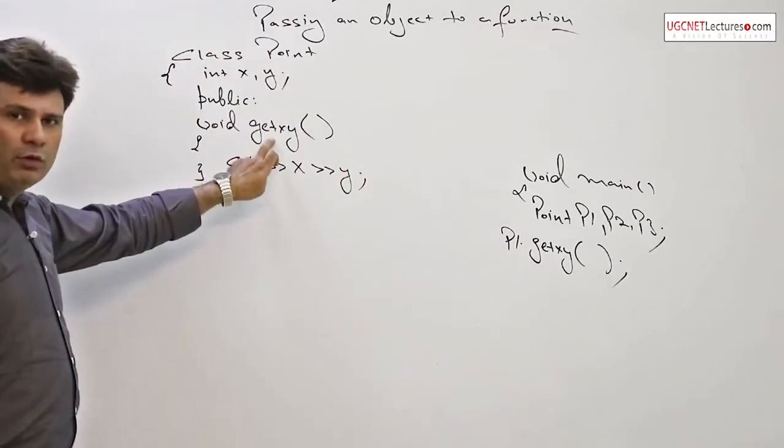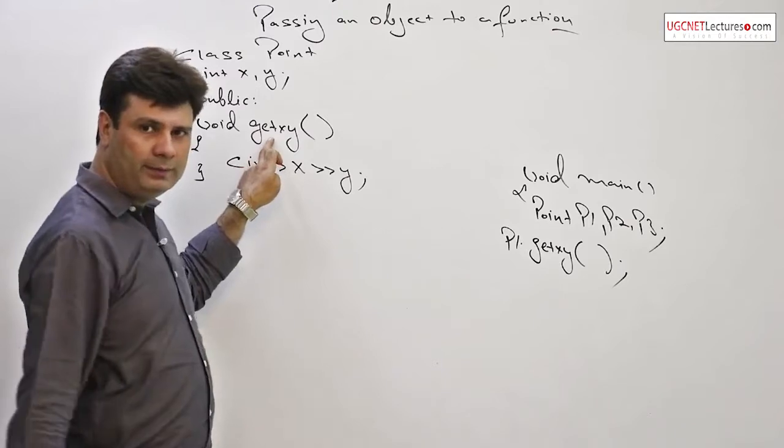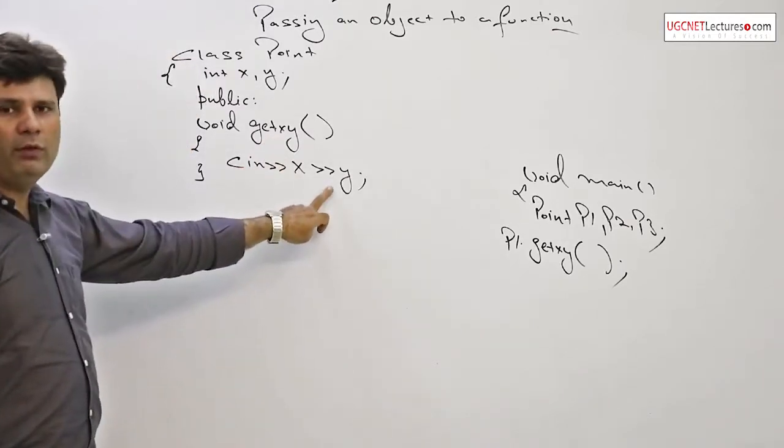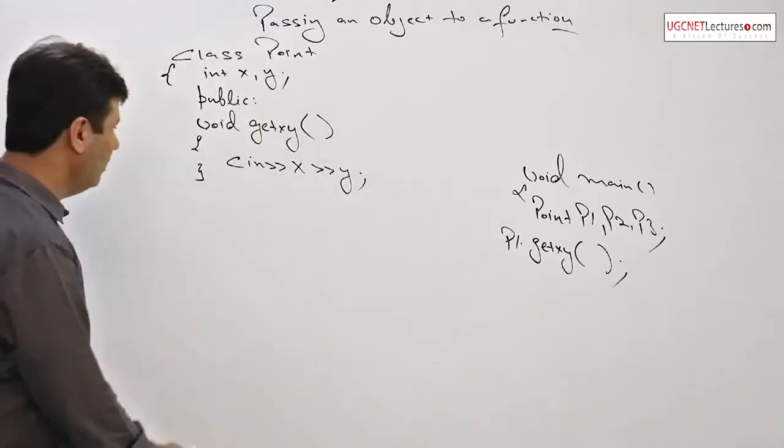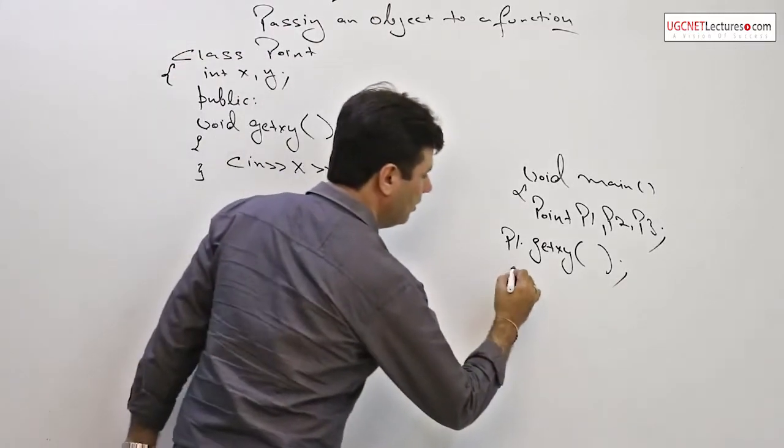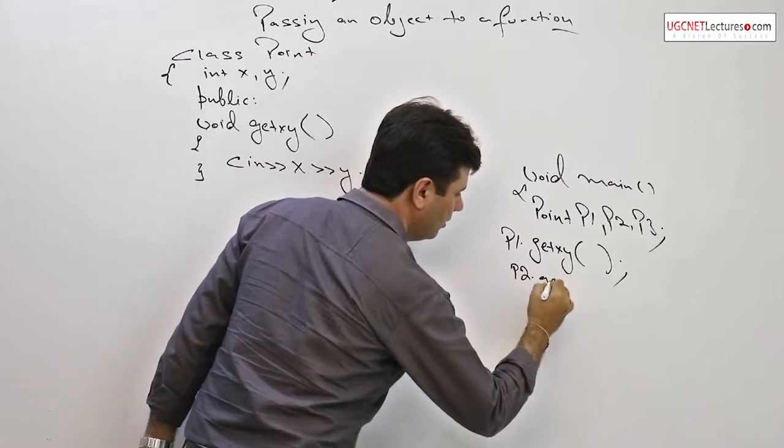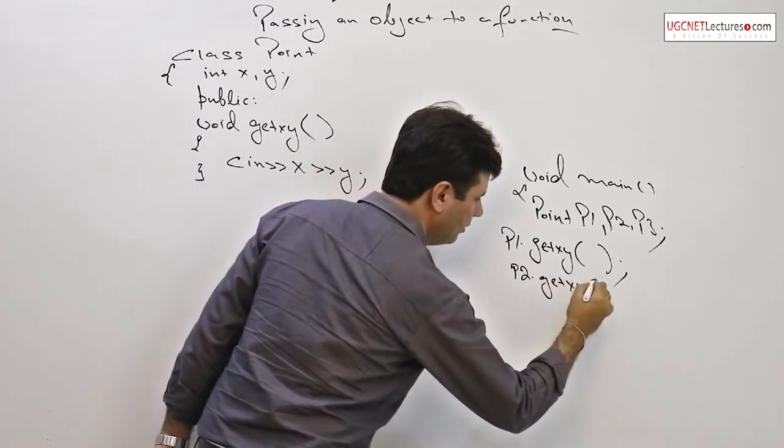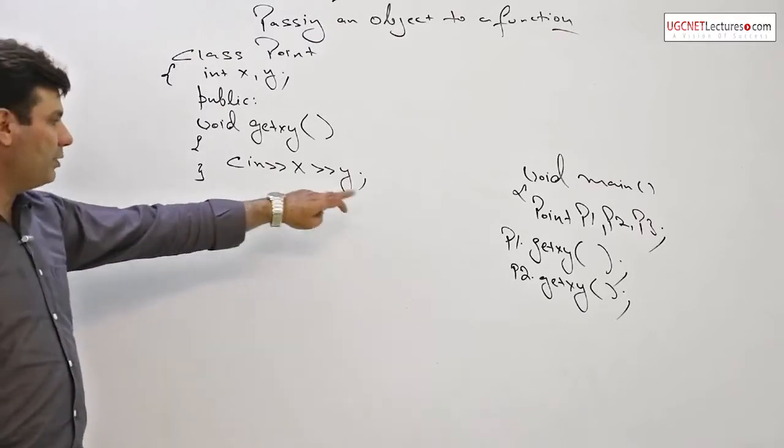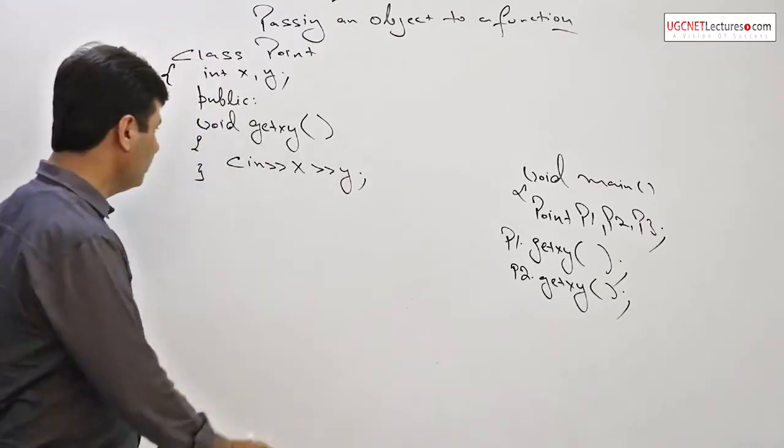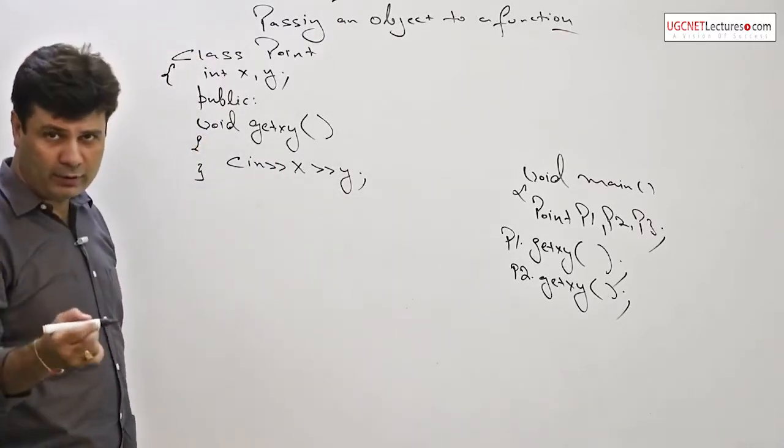The function will get invoked with the reference of p1. Whatever user input will automatically reflect to the p1 which is defined within the main function. For the second time p2 dot get xy, the value will get stored automatically in p2. No object reference is required. This is the first major difference.